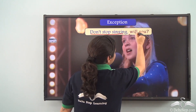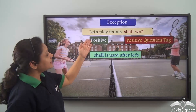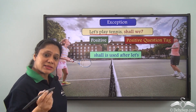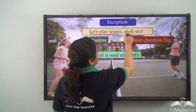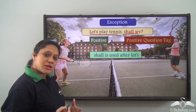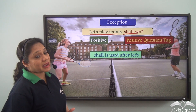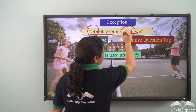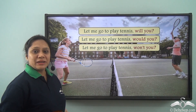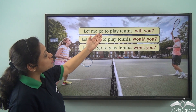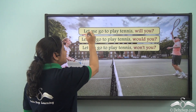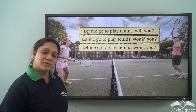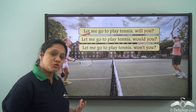'Let's play tennis, shall we?' — here 'Let's play tennis' is a positive imperative and 'shall we' is the positive question tag used with it. This is an exceptional case, and you must remember that whenever we have 'let's' we always use 'shall.' But if we have a sentence like 'Let me go to play tennis,' where 'let' is used to ask for permission, we can form question tags in various ways as we do with imperatives.